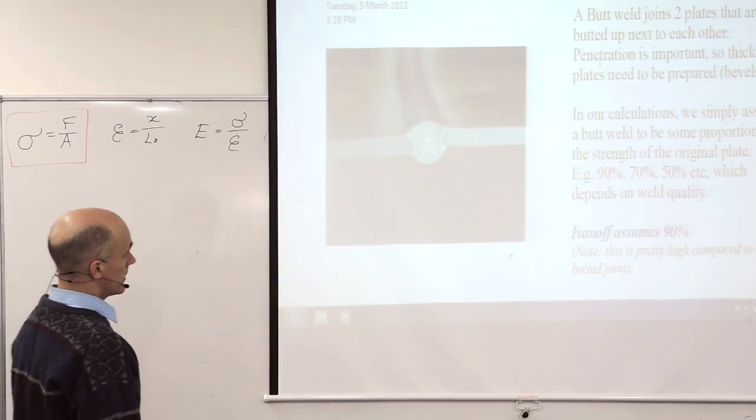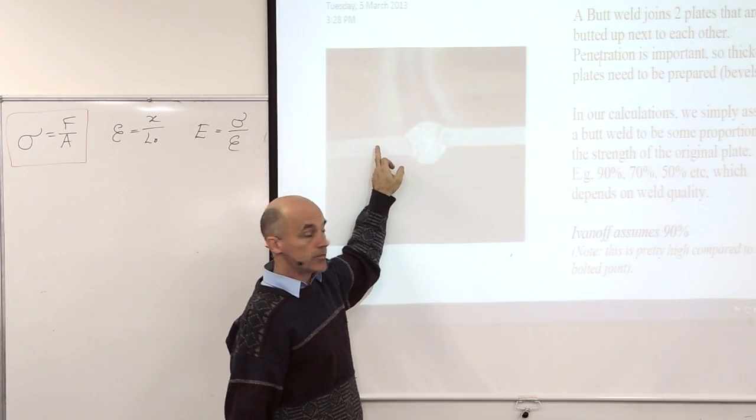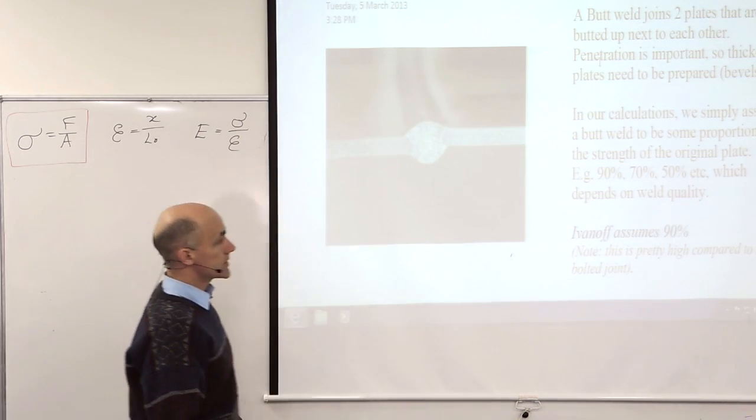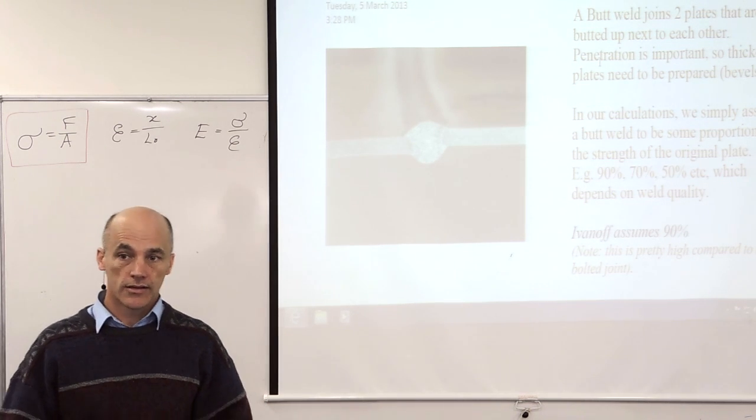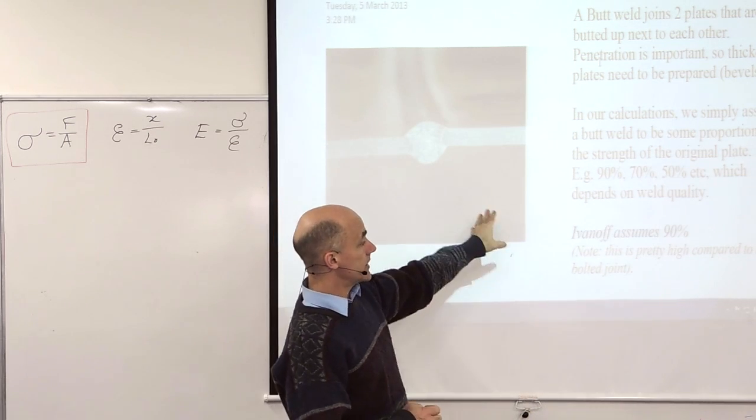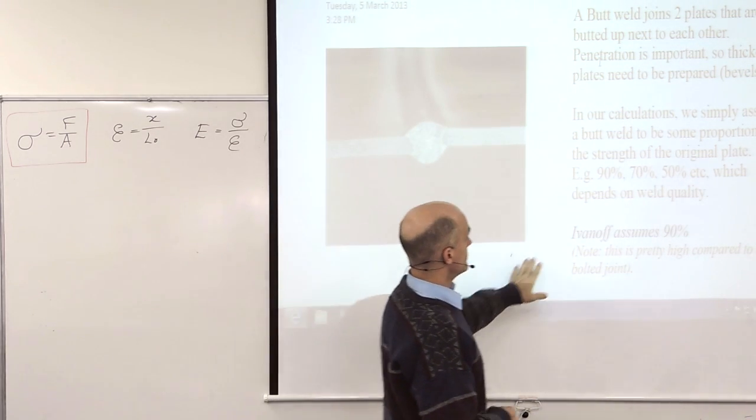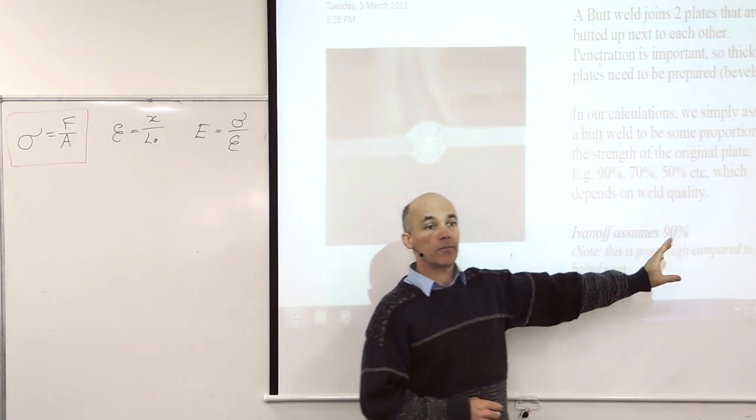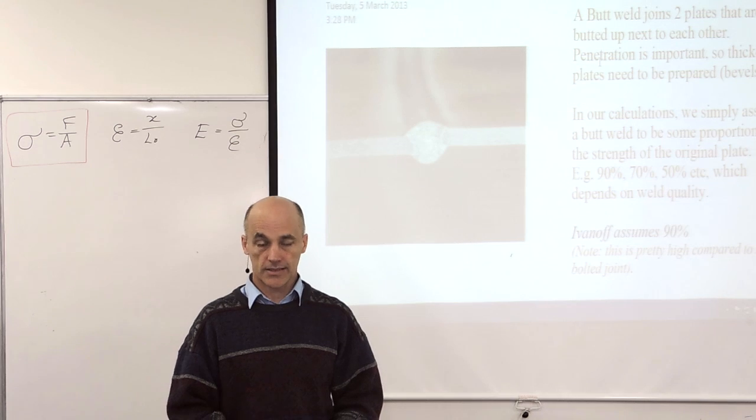With a butt weld there's not really any calculation to do because that material is taking the place of the parent material. And so all we do is give it a factor, what percentage of the original strength. Just like when we had bolted joints we had joint efficiency. Well this percentage is actually joint efficiency. And in the textbook Ivanov assumes 90% for our butt joints. So you're given a butt joint. What's the strength of the joint? 90% of the original plate. That's it.